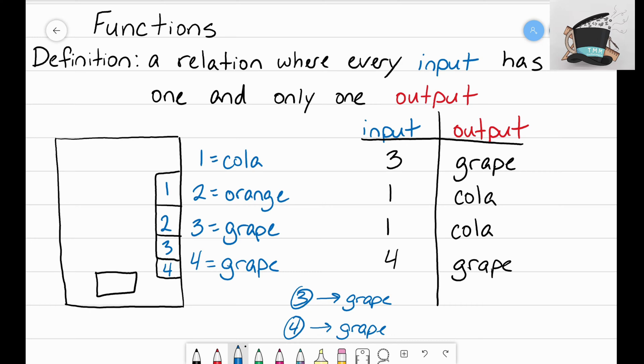What's not okay is that you have one input and it gives you two different outputs. This is okay. We would say that this is a function, it is functioning properly, because every input that I have gave me one and only one output.